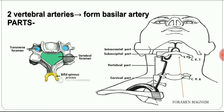Anatomically the vertebral artery is divided into four segments. The first portion, from its origin at the subclavian artery to where it enters the transverse foramen of the sixth cervical vertebra, is the first part or cervical part. The portion running within the transverse foramina up to the upper cervical region is the vertebral part, or second part.